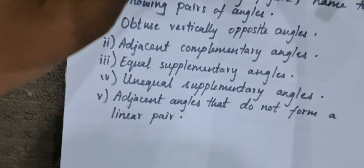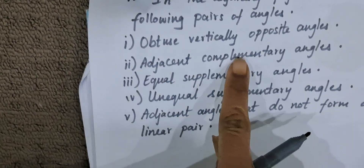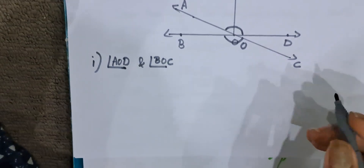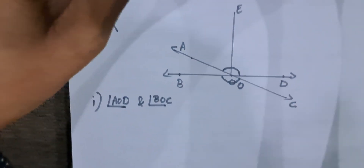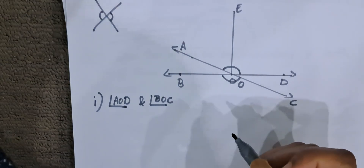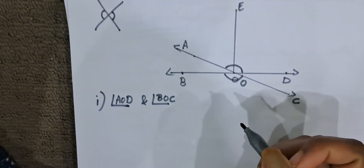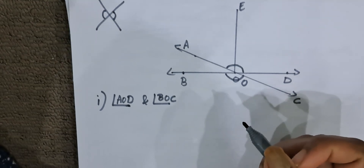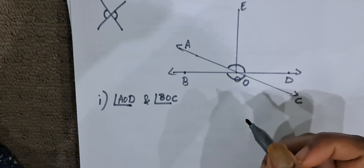Now the second part: adjacent complementary angles. Adjacent angles means angles which are next to each other, side by side. Complementary angles means two angles whose sum is 90 degrees.